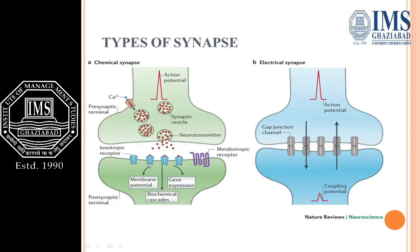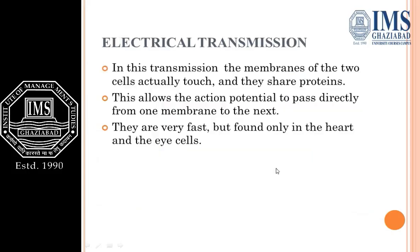In the chemical synapse, voltage-gated calcium channels are present, vesicles contain neurotransmitters, receptors are present, and there is a cleft. In the electrical synapse, action potential is generated and transferred through gap junctions. In electrical transmission, the membranes of two cells touch each other and share proteins, allowing the action potential to pass directly from one membrane to the next. Electrical synapses are very fast but found only in heart and eye cells.